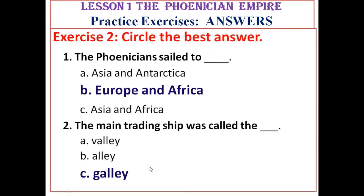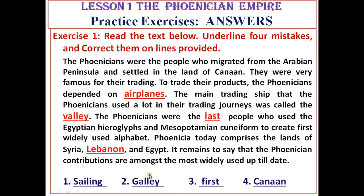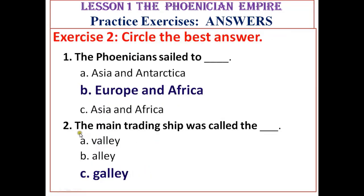For Exercise 2, the first question — what the Phoenicians sailed to — the correct answer is choice B: Europe and Africa. The second question — what the main trading ship was called — the correct answer is galley, not valley or alley. We have studied this: the main trading ship was called the galley.